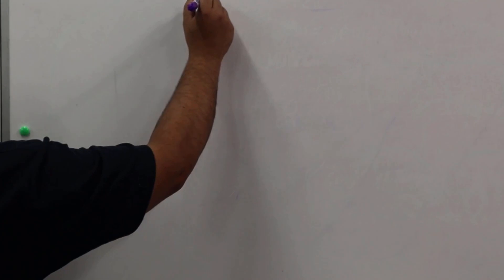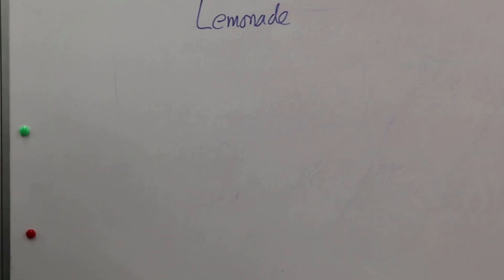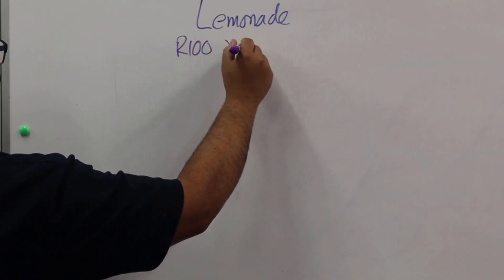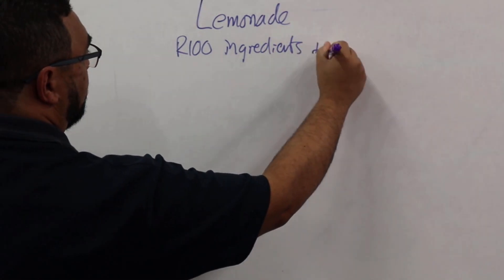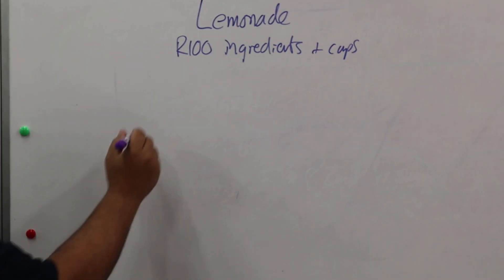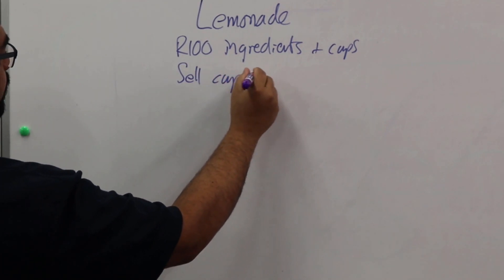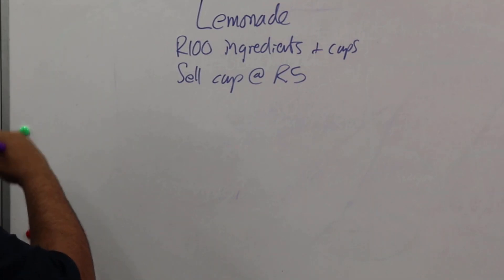In our first example, let's say you want to sell some lemonade — a classic lemonade stand. You spend 100 rand on ingredients and cups, and you sell each cup for five rand. The question is: how many cups do we need to sell to break even? We use our break-even point formula to solve this.